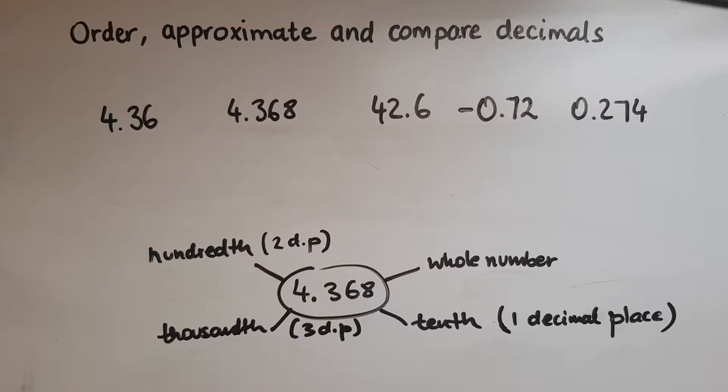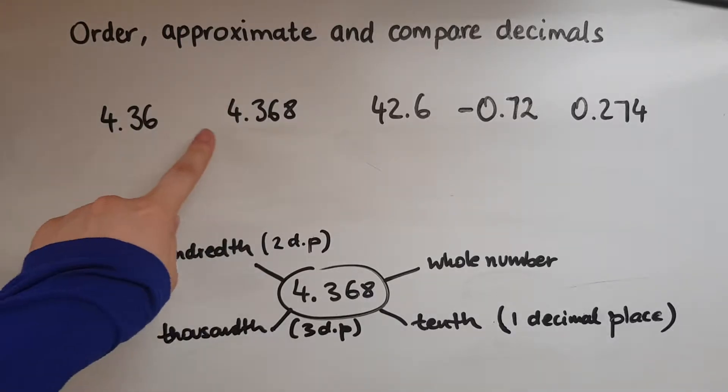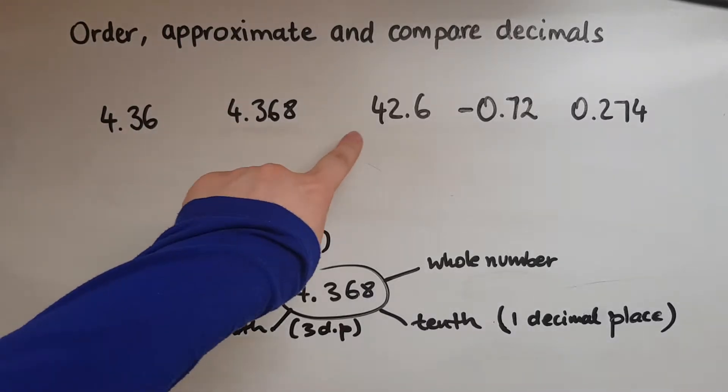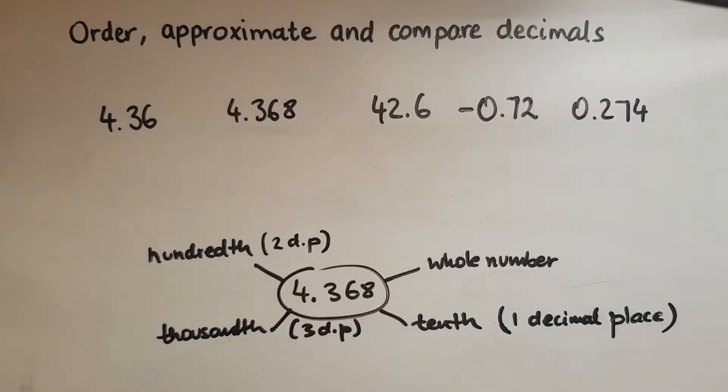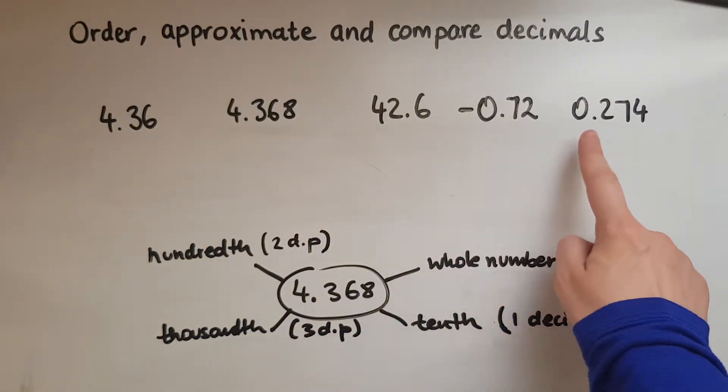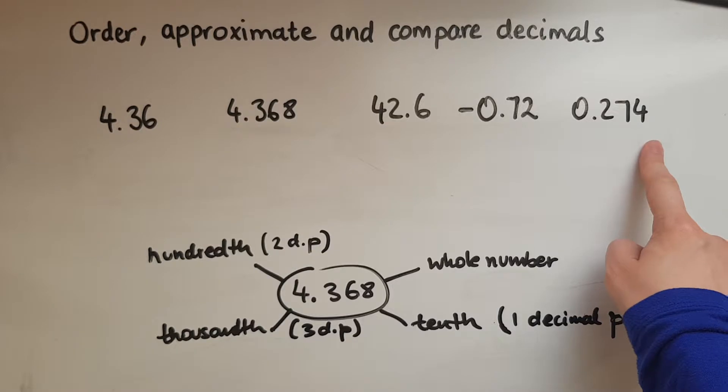So I've got five decimals here: 4.36, 4.368, 42.6, minus 0.72, and 0.274.